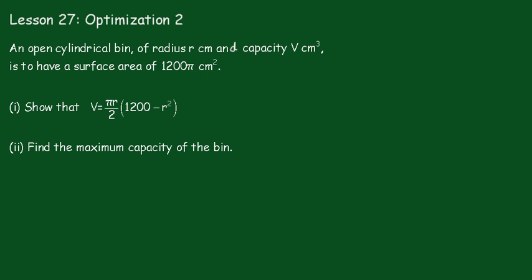Lesson 27: Optimization 2. An open cylindrical bin of radius r centimeters and capacity V cubic centimeters is to have a surface area of 1200π centimeters squared. In part 1, show that V equals πr divided by 2 times 1200 minus r squared.